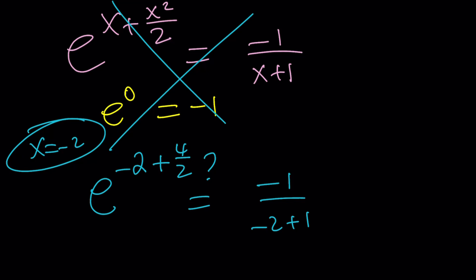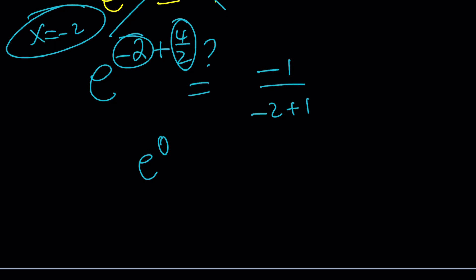This is negative 2. That's positive 2. e to the power 0 is 1. And this is negative 1 divided by negative 1, which is also 1. So, 1 equals 1. Yay, it checks out.